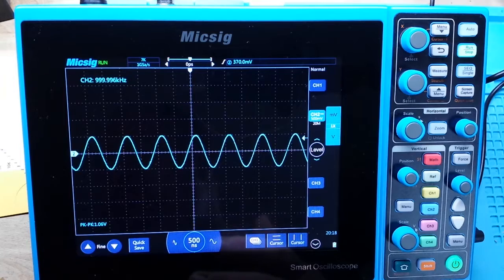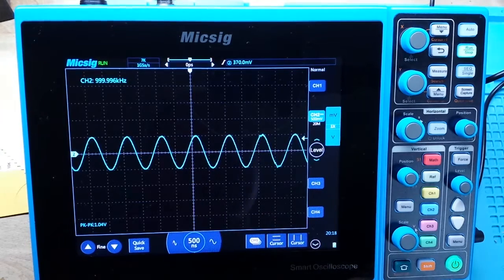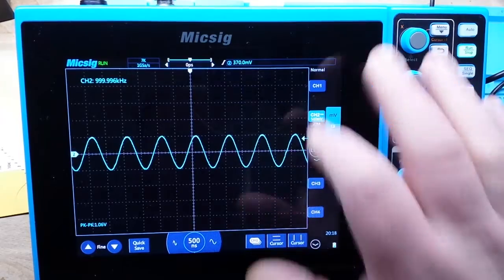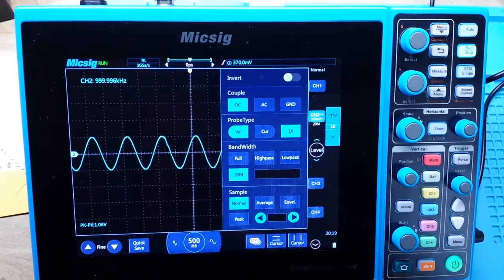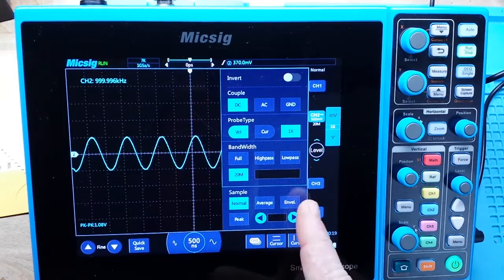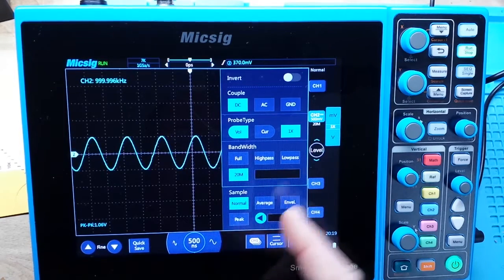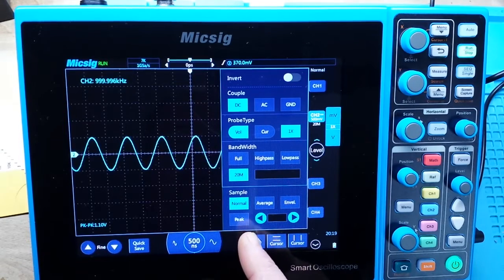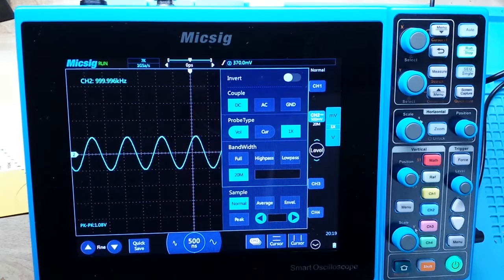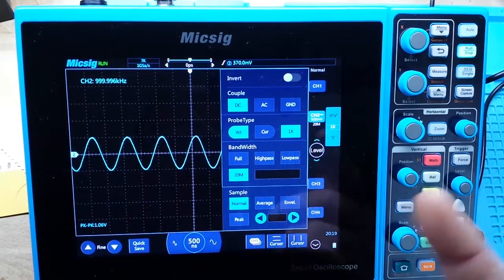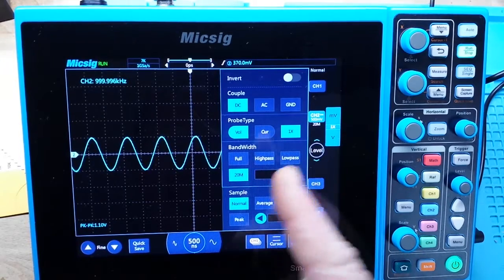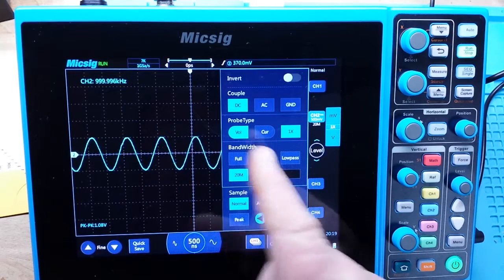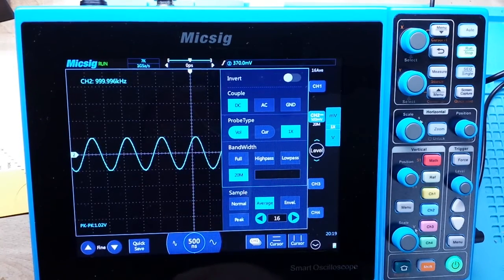That is a just a little talk on acquisition modes. All your scopes have them. Most of them are going to have normal, peak, and average. This one is lacking high-res which I find really odd for a higher end scope like this. Envelope's one that you're not going to see in a lot of lower end ones, but it's good. Just remember normal for most of your acquisition modes. If you're getting a lot of noise or something, you can go with average.